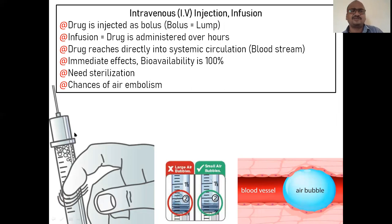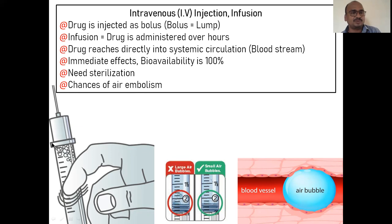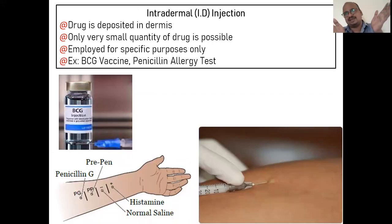Intravenous injection — also called bolus — delivers the drug directly into the vein and systemic circulation. IV infusion is for long-term delivery, such as 500 ml or 1 liter. Bioavailability is 100%. Sterilization is required. A major risk is air embolism — if air bubbles enter the vein they travel to the heart, block blood vessels, cut off blood supply to an area, and the patient may die. It is very difficult to reverse this once it occurs.